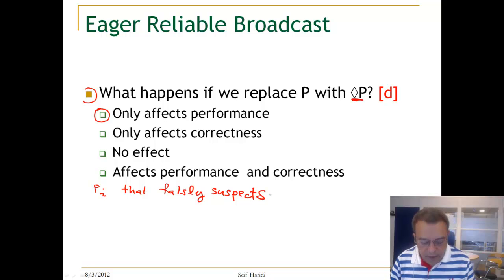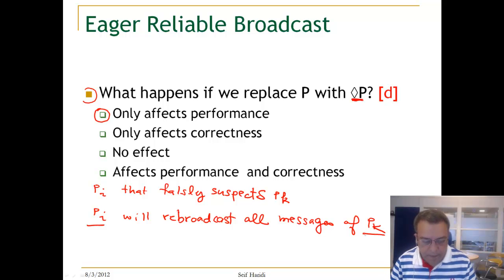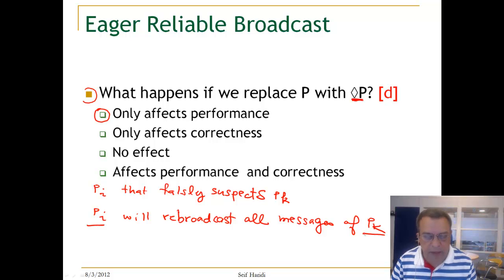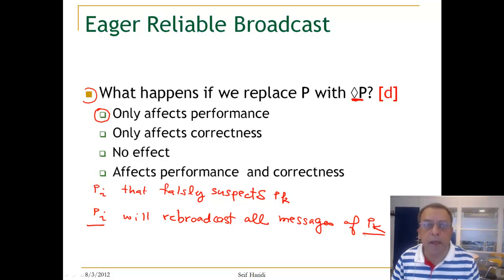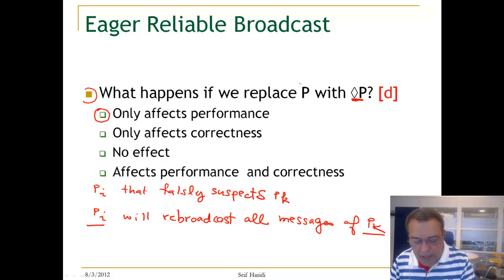What can happen is the following: if we have a process PI that falsely suspects PK, PI will rebroadcast all messages of PK. That is the only thing — it will lead to unnecessary rebroadcasting of messages. That will not affect correctness because we have the delivered variable that guarantees that no duplicates are delivered. We will get an algorithm that sometimes rebroadcasts messages that should not otherwise be rebroadcasted if we had a perfect failure detector.